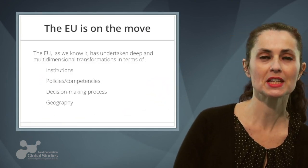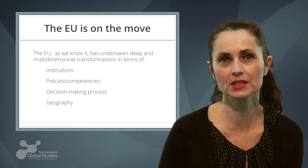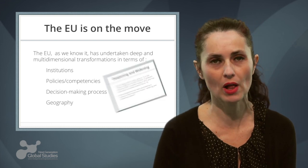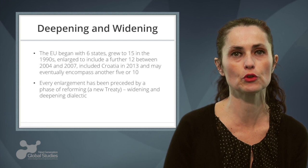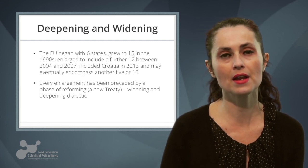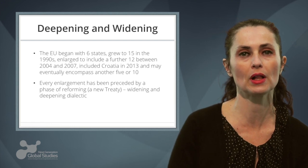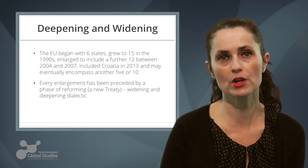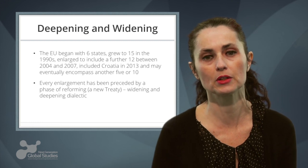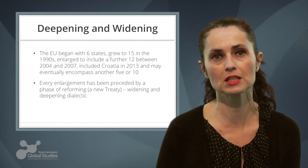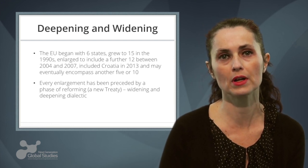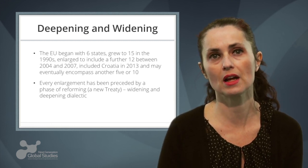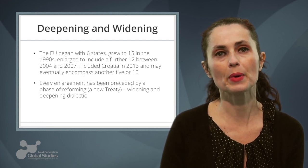As you know, the European Union has changed over time — in terms of policies, in terms of institutions, decision-making process, and in terms of membership as well. The EU began with six members, it grew to 15 in the 90s, and it included a further 12 member states between 2004 and 2007. And as you know, Croatia joined the European Union this year. Every enlargement has been anticipated by a phase of deepening, so the dialectic between deepening and widening has always characterised the history of the European Union.